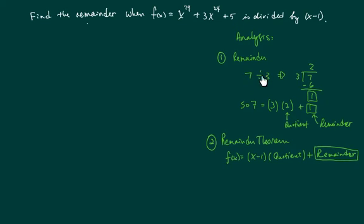If we have a division, 7 divided by 3, we have a quotient of 2 and remainder of 1. So basically we are rewriting 7 as 3 times the quotient plus the remainder. Well, remainder theorem says the same thing when it comes to big long polynomials.